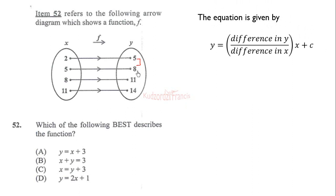We find the difference between these values to see if they are constant: 40 minus 11 is 3 (wait — 14 minus 11 is 3), 11 minus 8 is 3, 8 minus 5 is 3, and 5 minus 2 is 3. The difference is constant, so we can use this formula.